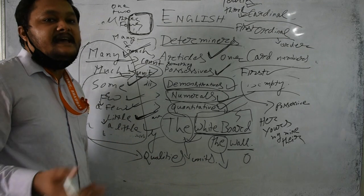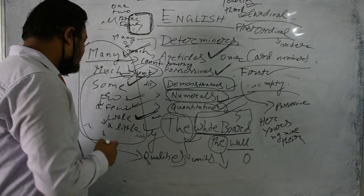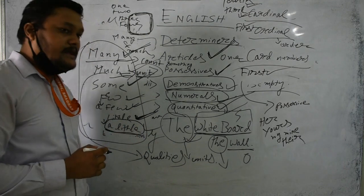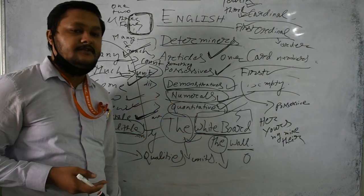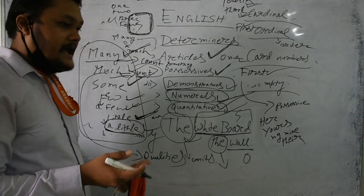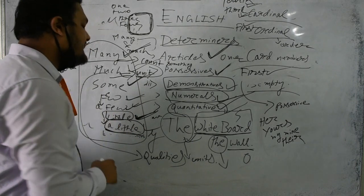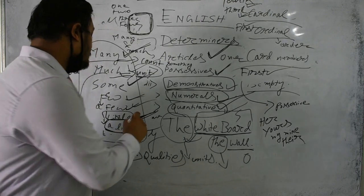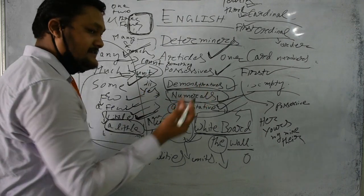Similarly, the differentiation between 'little' and 'a little': 'there is little water left in the jug' is said in a negative sense — almost nothing is left. When I say 'a little water is left,' I am denoting a positive sense. For instance, if a thirsty woman asks for water, I would say 'yes, I have a little water, you can have it.' But if I say 'I have little water,' I do not want to part with it. So 'a little' is positive and 'little' is negative.